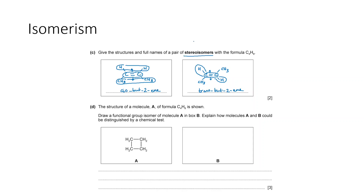The structure of molecule A with formula C₄H₈ shows no carbon-carbon double bonds — it is a cycloalkane, specifically cyclobutane, where the end carbons of butane have bonded together. A functional group isomer has the same molecular formula but a different functional group. The functional group isomer of cyclobutane is but-1-ene, which has a carbon-carbon double bond instead of the ring structure.